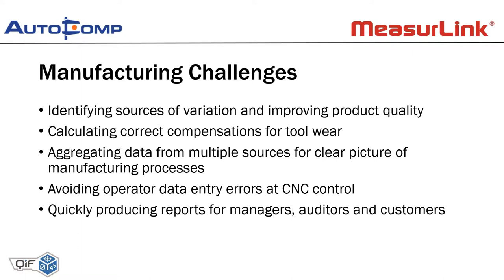We want to start off with some of the manufacturing challenges that we see in the industry today. First and foremost, identifying sources of variation and improving product quality. Variation is obviously inherent in all manufacturing processes — it's the enemy of good quality — and we really want to identify where this variation is coming from and limit it. We're going to look at what our solutions to these challenges are, ultimately improving product quality.